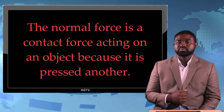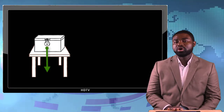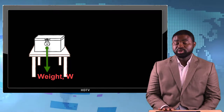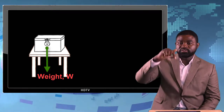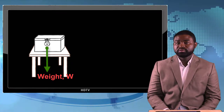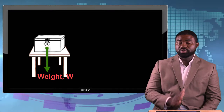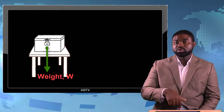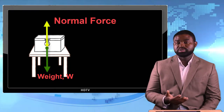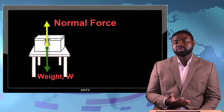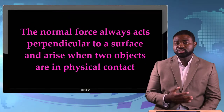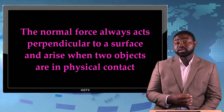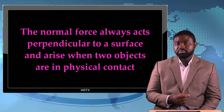For example, consider a crate that rests on a flat surface. Obviously the crate has weight because the earth is pulling it downwards, so the gravitational pull of the earth on the crate is downwards. But the reason the crate itself is not falling through the earth is because there is a force opposing that downward force, acting upwards. We call that force the normal force. It is a force, meaning it has a magnitude and a direction.